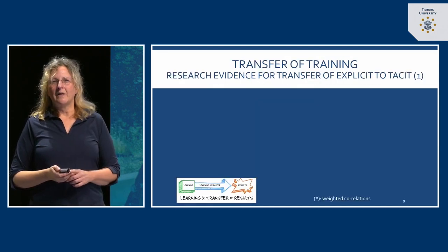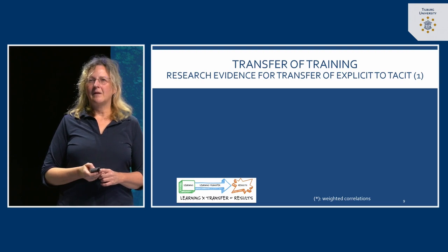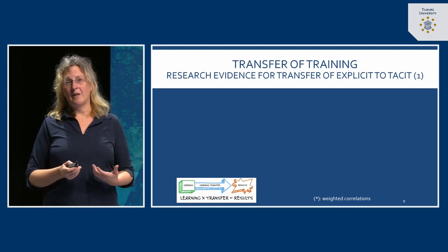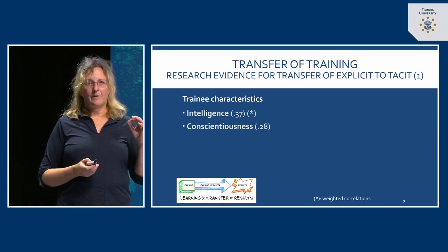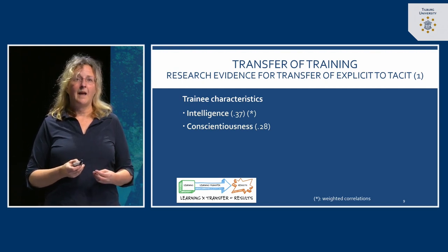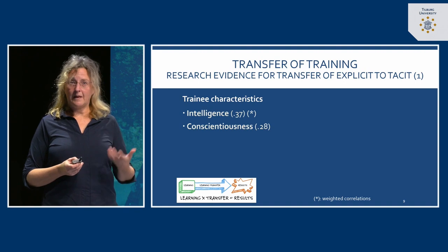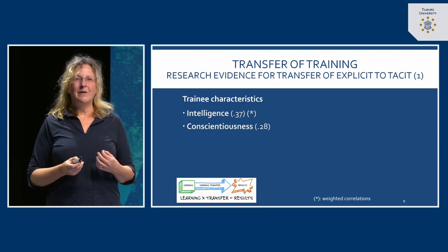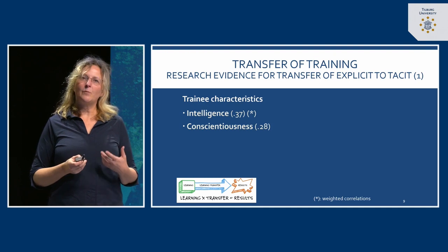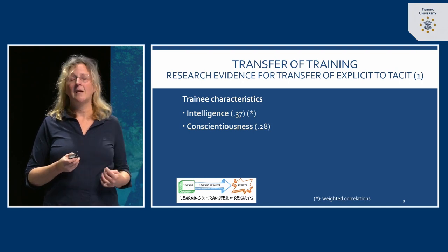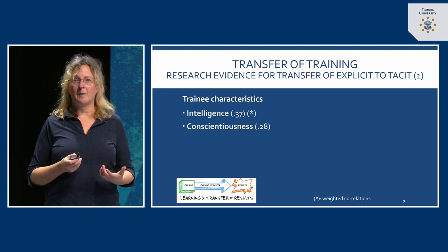What is the research evidence for transfer of explicit to tacit? Blume et al. did a large meta-analysis and found all kinds of causes for a successful transfer. They demonstrated that it depends from one person to the next whether they will use the knowledge in practice — this has to do with people's intelligence and also people's willingness to work hard and conscientiousness. As you can see from the figures, the correlations are 0.37 and 0.28 — pretty strong correlates. So you can honestly say it depends from one person to the next whether they will use a skill or knowledge picked up in the training.